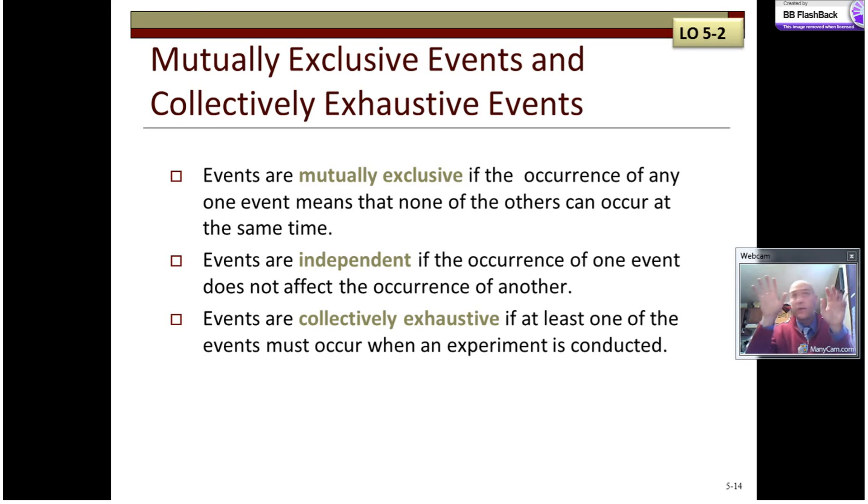Odd numbers, even numbers, one, three, five, two, four, six, one, two, three, four, five, six. Yeah, all outcomes are in events. If I have an event over here rolling less than three, I have an event over here rolling greater than five. Well, over here I only have one and two. Over here I only have six. Three, four, and five, those outcomes aren't assigned anywhere. I do not have collectively exhaustive events.